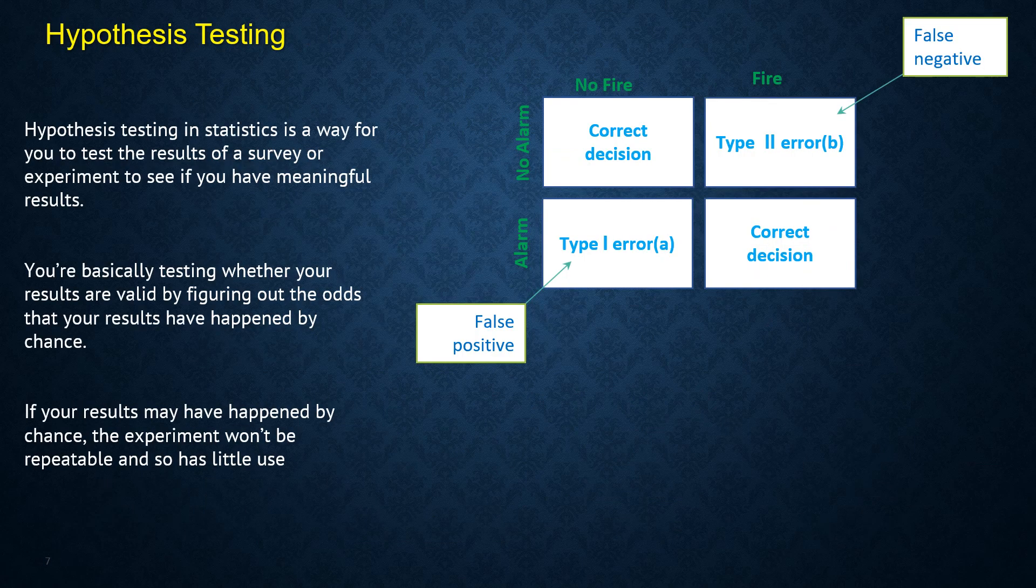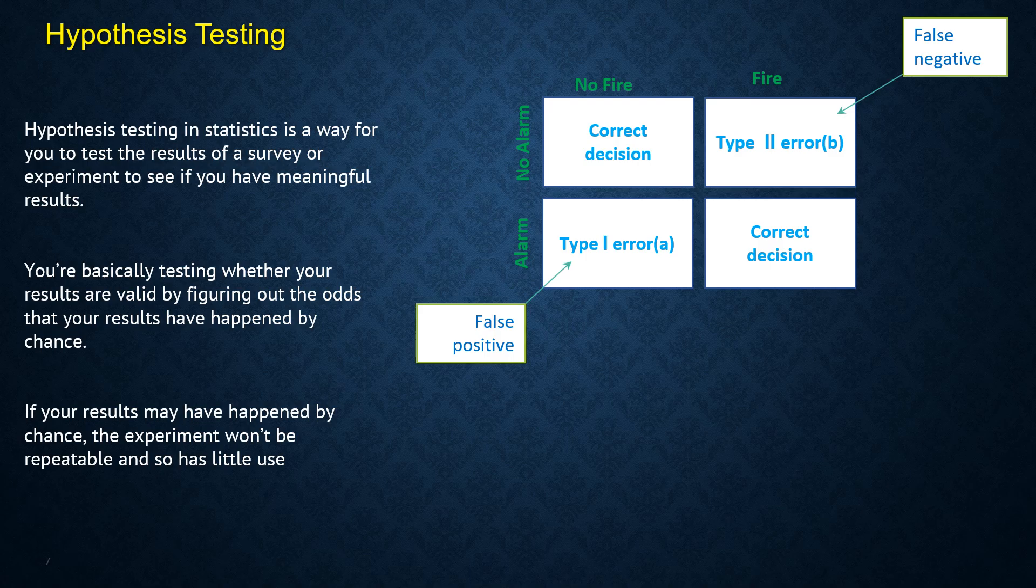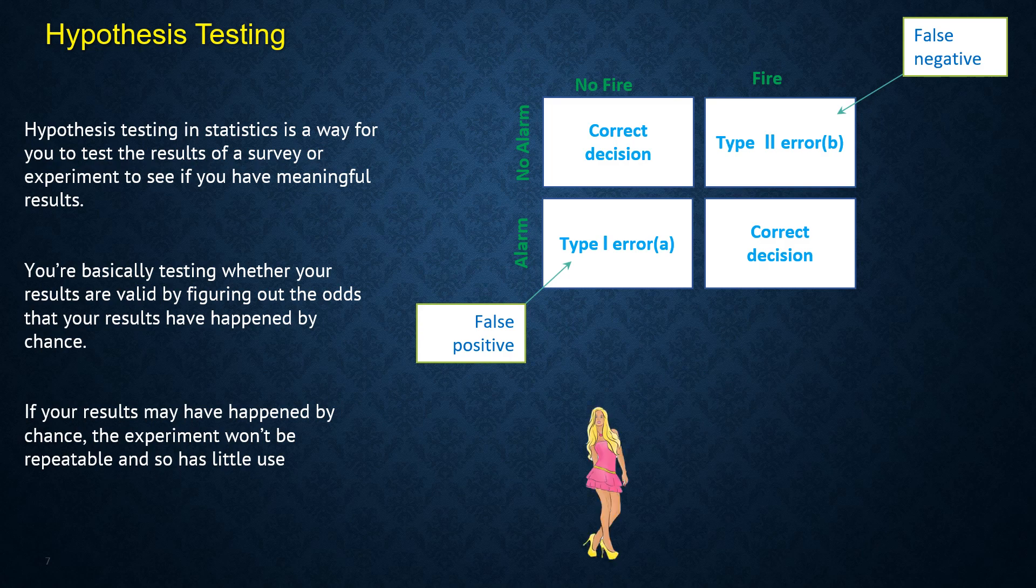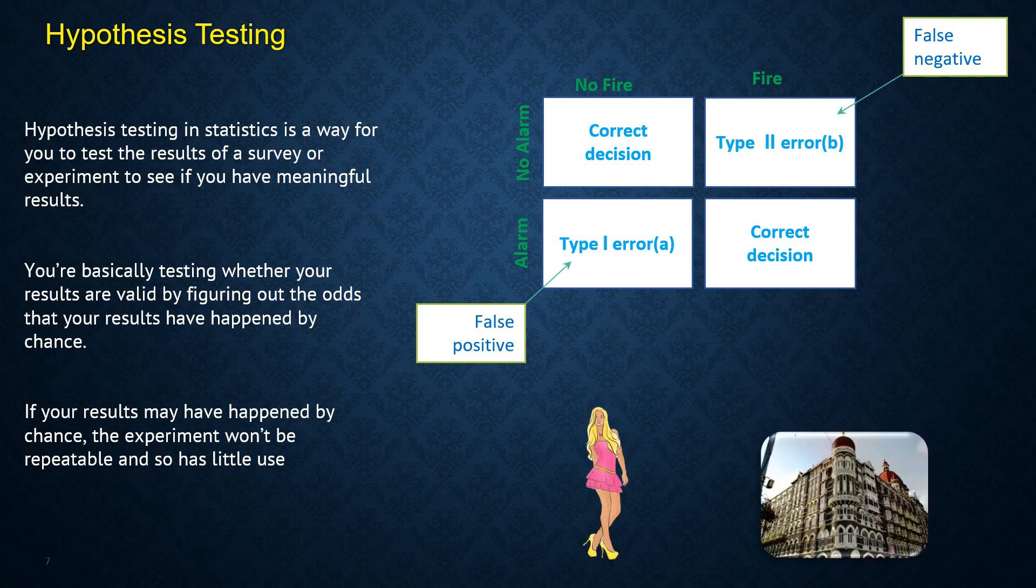Hypothesis testing in statistics is a way for you to test the results of a survey or experiment to see if you have meaningful results. This is done by figuring out the odds. Think about this girl staying in a hotel which has an emergency fire alarm system. There are four possibilities. No alarm, no fire.